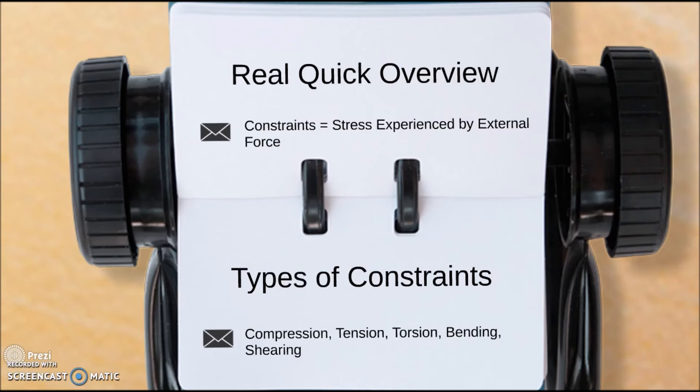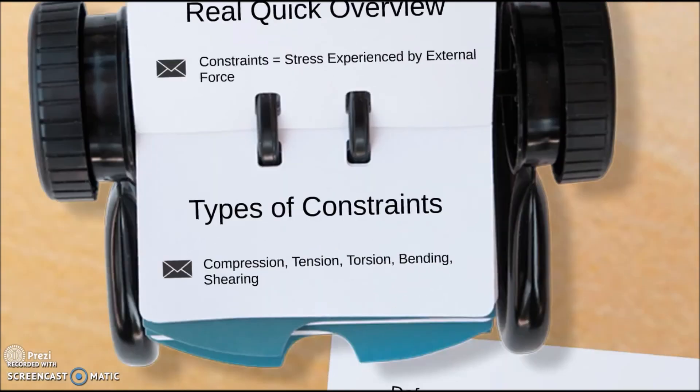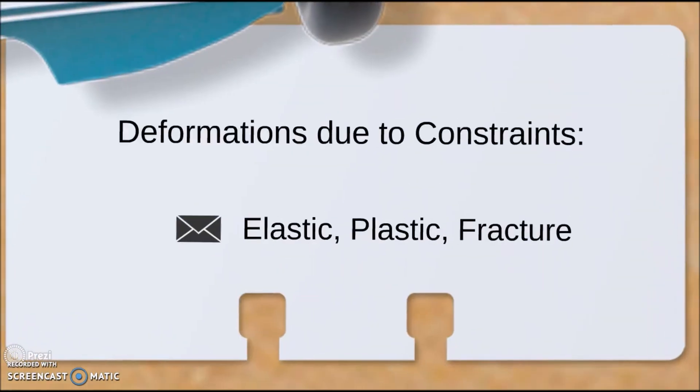There are three kinds of deformations that can happen due to constraints. Elastic, which means that the deformation is very temporary and the technical object resumes its shape. Plastic deformation, which is permanent deformation. And fracture, meaning that it is broken, it is crushed.